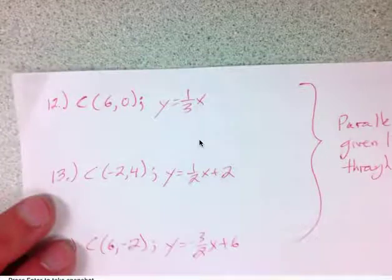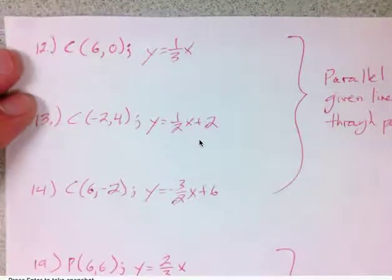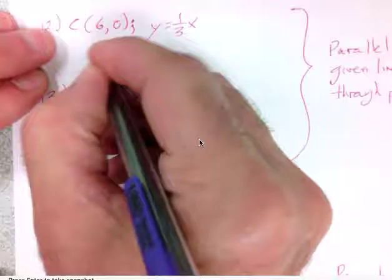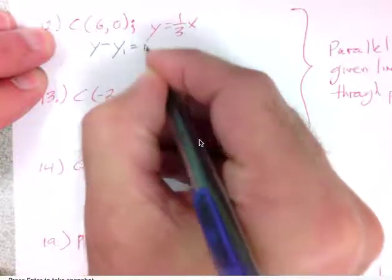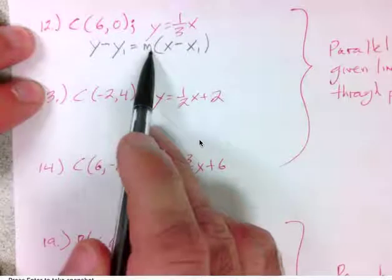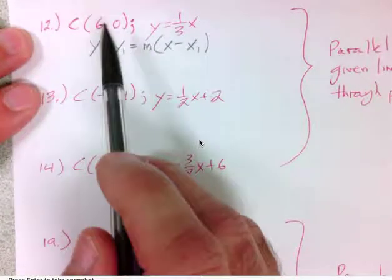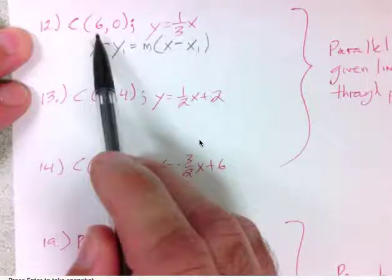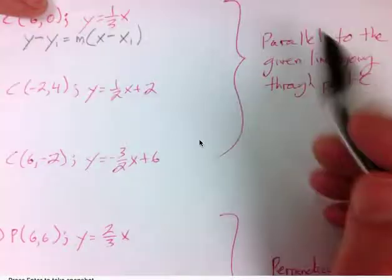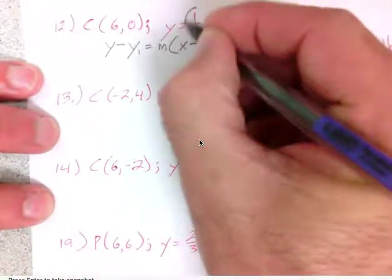Now let's look at the algebra-style questions — numbers 12, 13, 14, 19, 20, and 21. For all of these, you can rely on the same formula: point-slope form. We substitute the slope we need, and then to fix that line in the plane, we need a specific point the line goes through. For questions 12, 13, and 14, that's the given point C. The goal is to write a line parallel to the given line that goes through point C. To be parallel, I need to use that same slope.